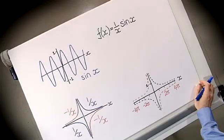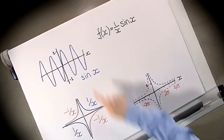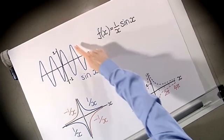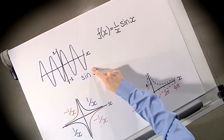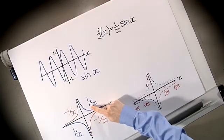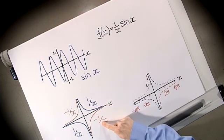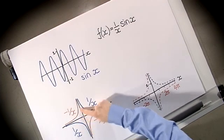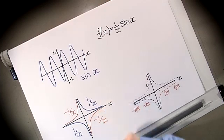Here's a similar example: the function f(x) = (1/x)·sin(x). Again, we start with a graph of sin(x) which lies between plus one and minus one. Because sin(x) lies between plus one and minus one, the function f(x) lies between plus 1/x and minus 1/x. So our sketch of the function will always lie in this region between the blue and the red curves.